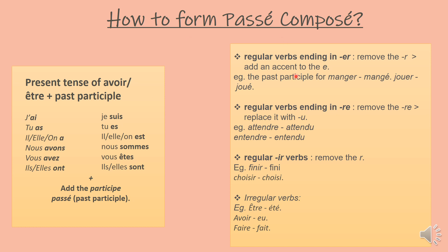For regular verbs ending in -ER, we remove the -ER and add an accented é. For example, the past participle for manger is mangé — we remove the -ER ending and add an accented é. Jouer becomes joué — we simply remove the R and put an accent on the E. For regular verbs ending in -RE, we remove the -RE and replace it with -U. For example, attendre becomes attendu, entendre becomes entendu. For regular verbs ending in -IR, we remove the R. For example, finir becomes fini, choisir becomes choisi.